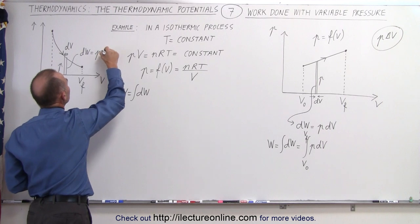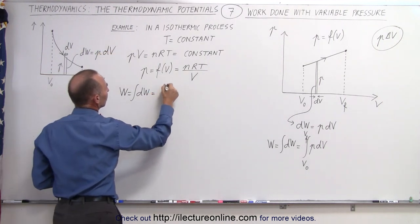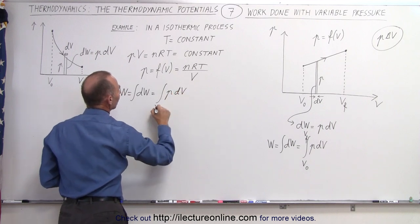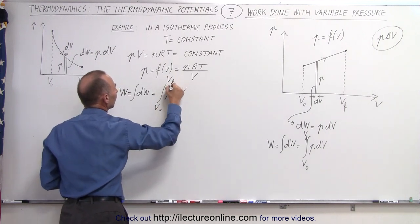So the dw is P times dV. And so this is equal to the integral of P times dV from V initial to V final.